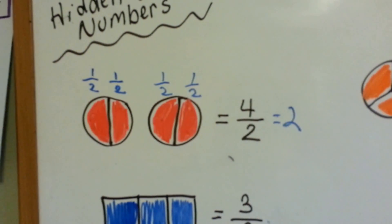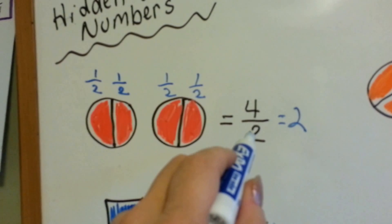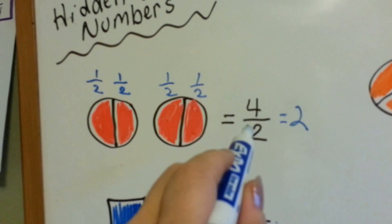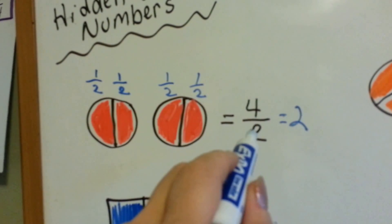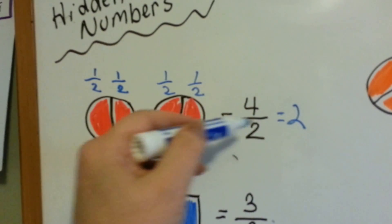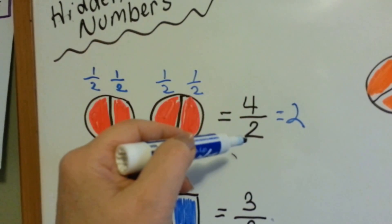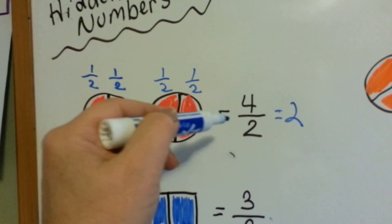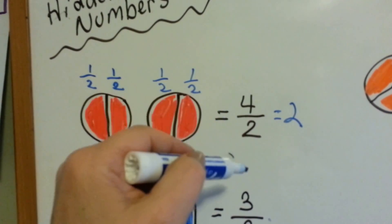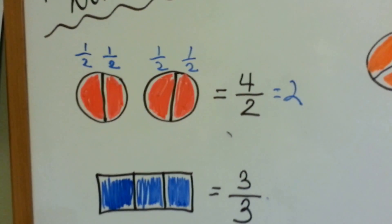The way we can do this quicker is to use division. This is called the dividing line — this is the numerator, that's the denominator. So read it as a division problem: four divided by two is two.